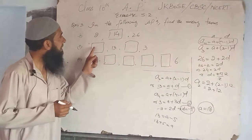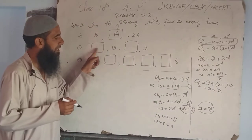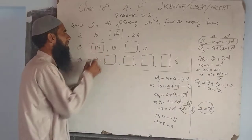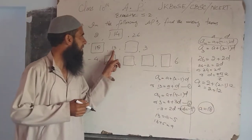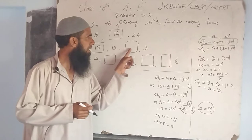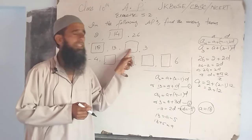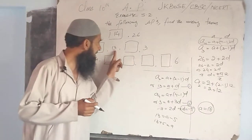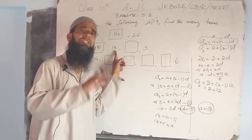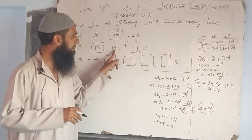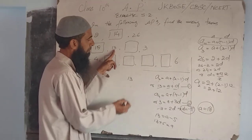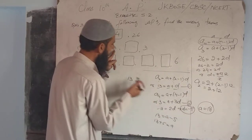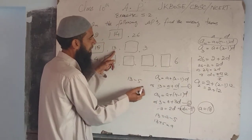Now we have to find the first term, that is 18. Second term is 13. Now for the third term, we have second term plus common difference. Second term is 13 plus common difference, and common difference is minus 5, that is 13 minus 5.